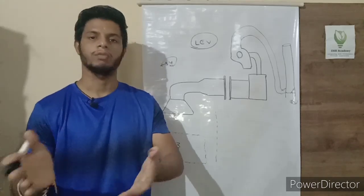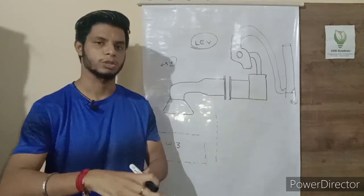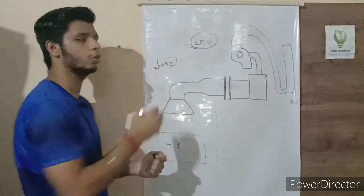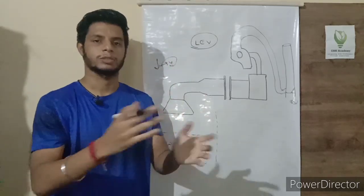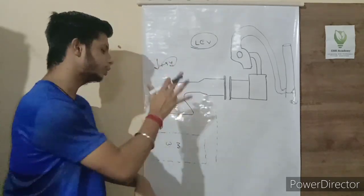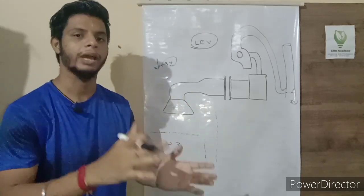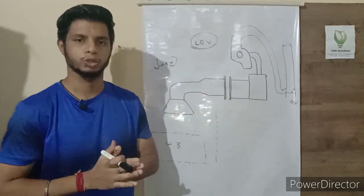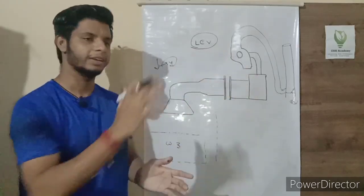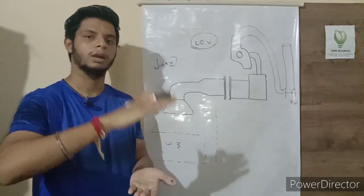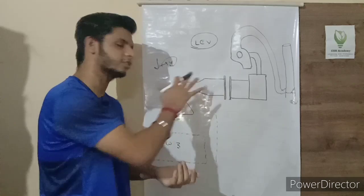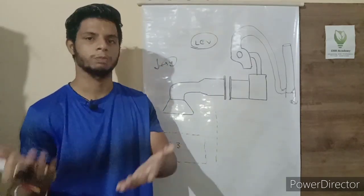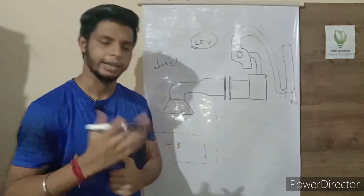As an employer, EHS officer, or safety professional, it's our responsibility to minimize that exposure. Based on the concept of TLV — occupational exposure limit / threshold limit value — we need to reduce worker exposure to acceptable limits. LEV is one protection system that can reduce that exposure to an acceptable level. After installing the system, we also need to carry out testing to check the level of a particular contaminant present.